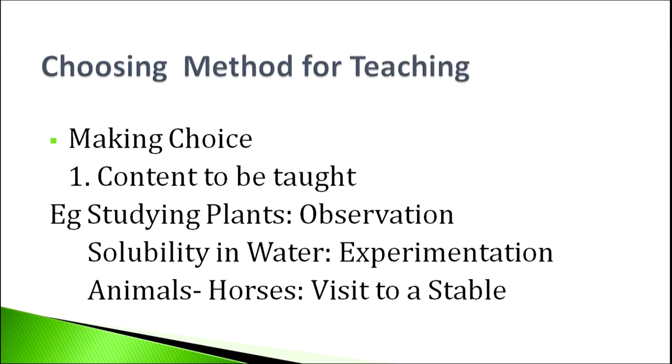Choosing a method has two main points. One is the content to be taught — that is very important. For example, if I want to study plants in the school garden, I may decide on the observation method and take children to observe plants. If I want to see solubility of different things in water, I may decide on experimentation — bring various things into the classroom and ask children to experiment and see what is soluble in water and what is not.